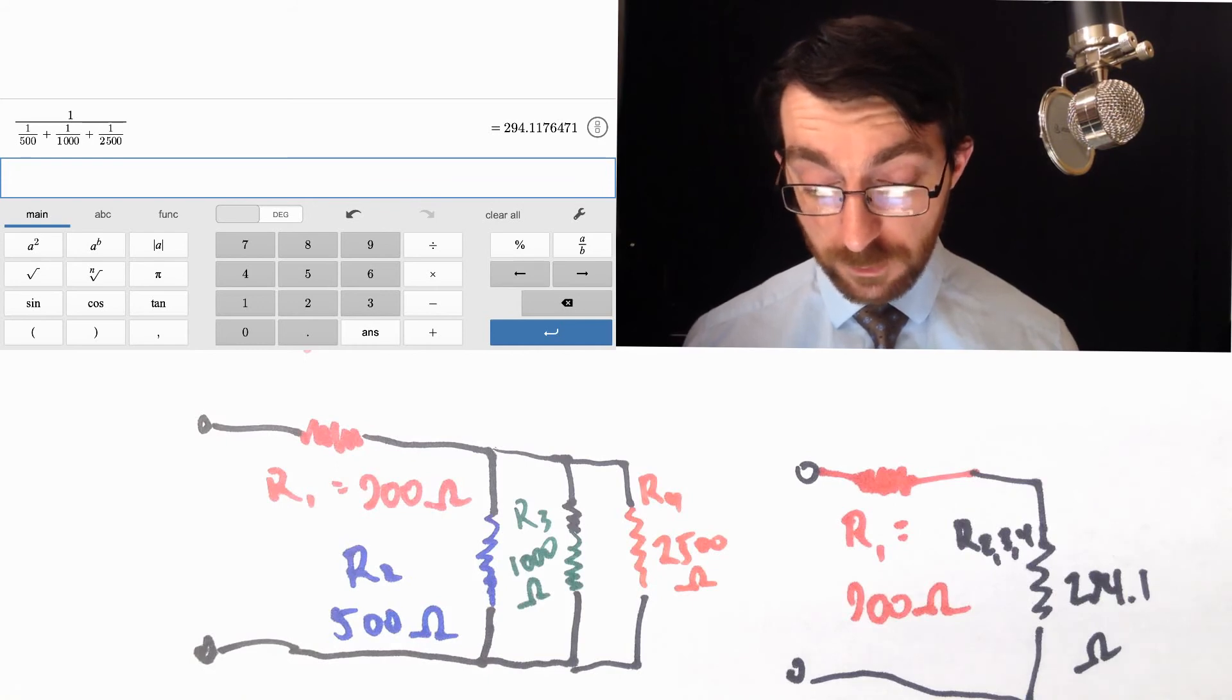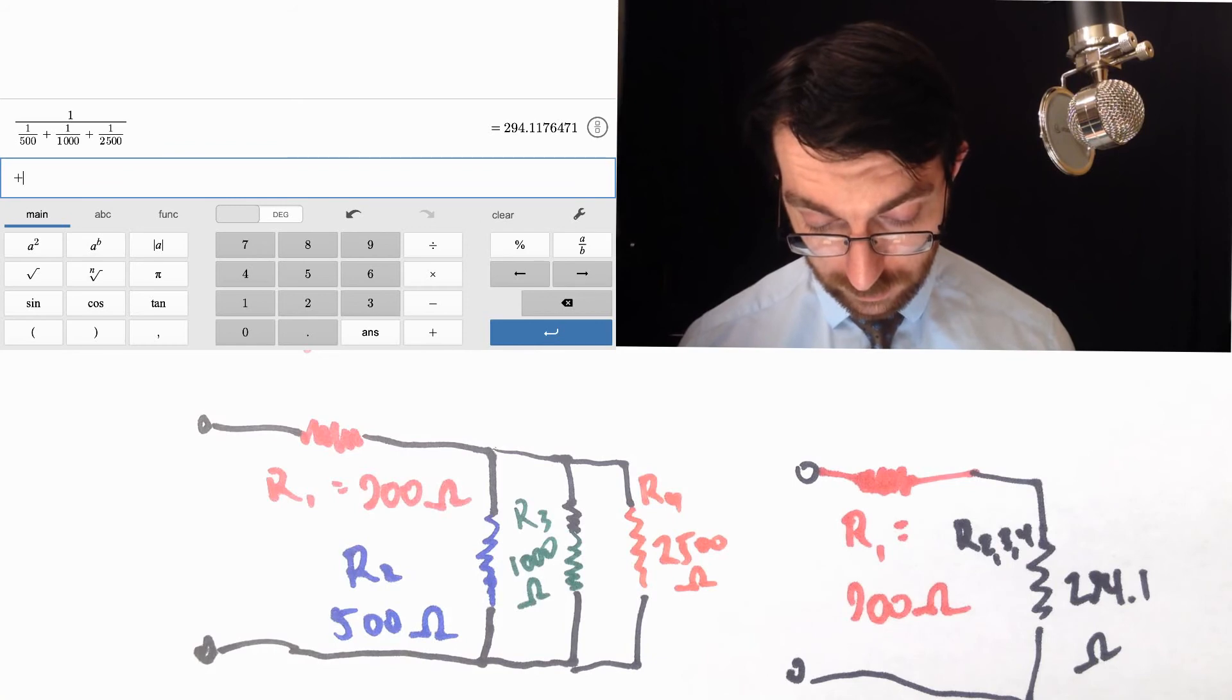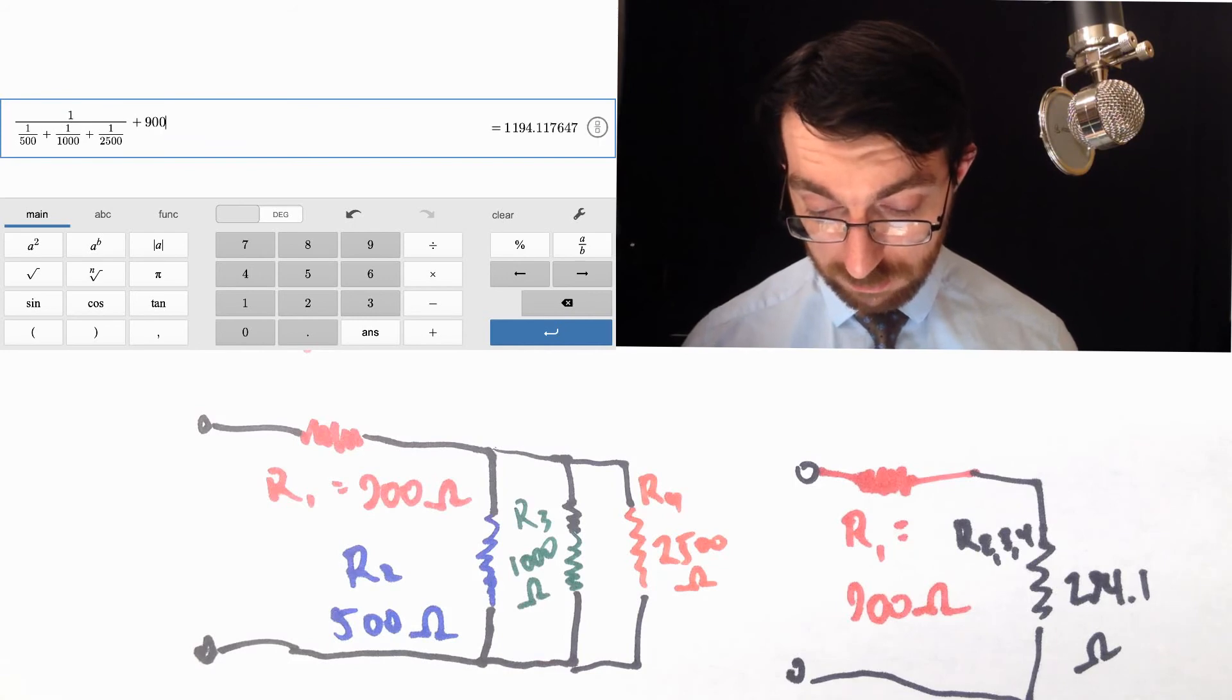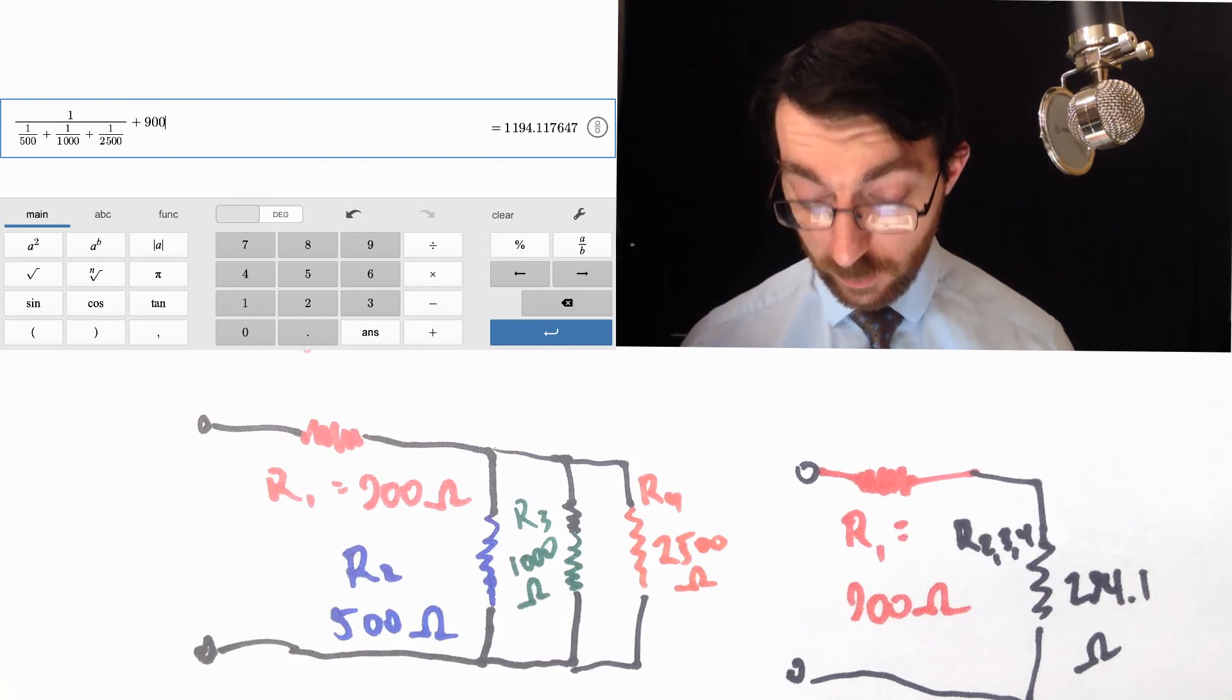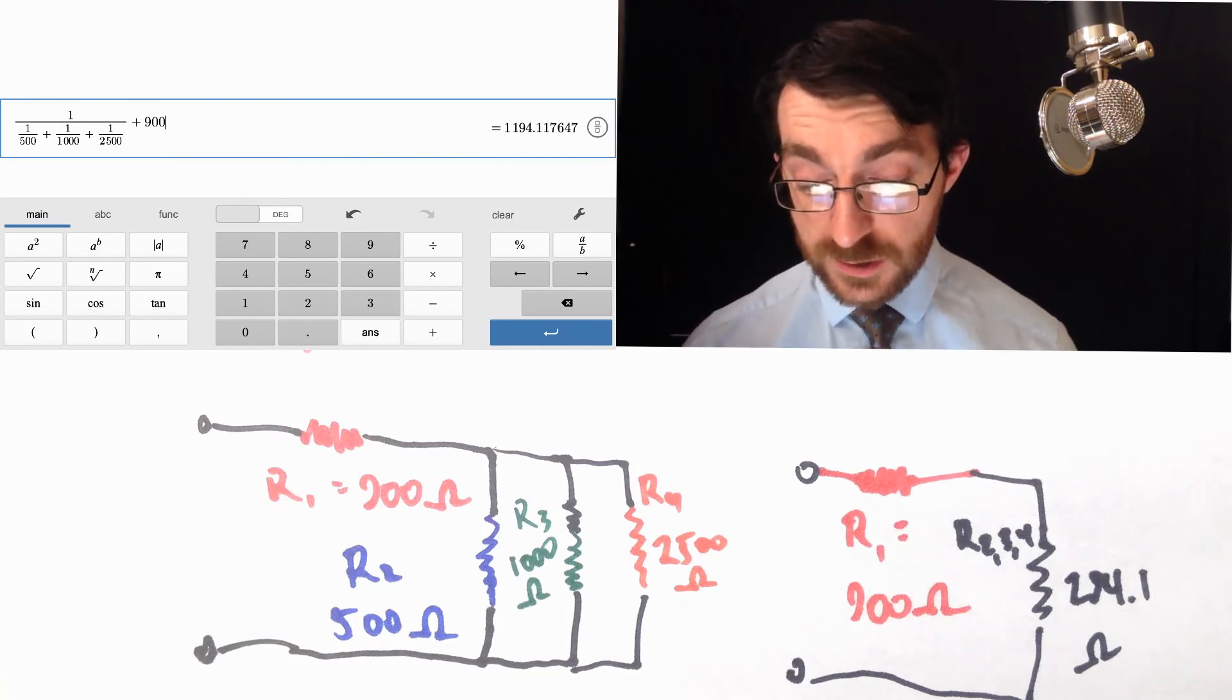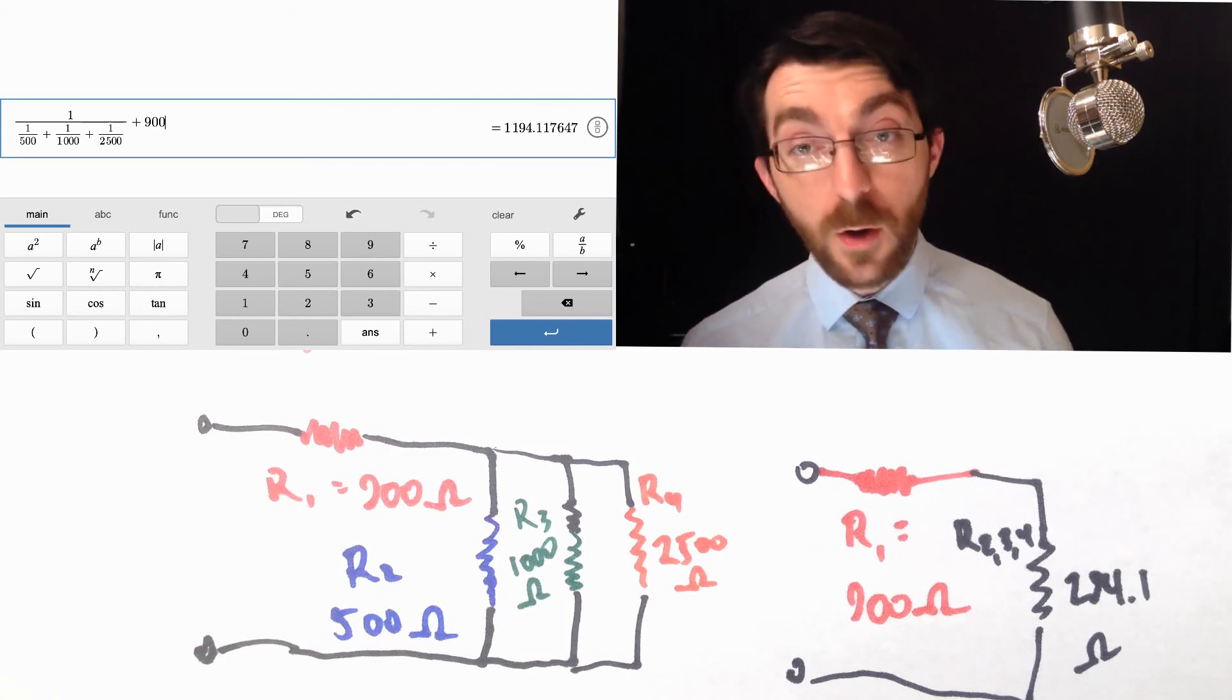All right, I just have to add them up then, so, plus 900, there you go, is 1,194.1. All right, well, there's your final answer. The total equivalent of the circuit is 1,194.1 ohms.